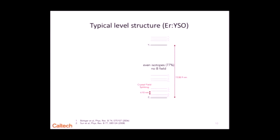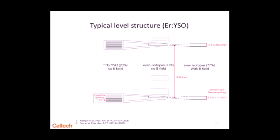So these are our atoms. If you think about the level structure, they have 4f states like z1, y1. When you place them in a crystal, these states split into the crystal field splitting, and the spacing is on the order of terahertz — about 10 nanometers. Here I show you the example of erbium, but the level structure is very similar for other materials like neodymium, terbium, and praseodymium. If you apply a magnetic field, this level splits into two Zeeman states, similar to an atom. If you have an isotope that has nuclear spin, you can have hyperfine splitting. For example, in erbium, each one of these levels is split into eight hyperfine states. If you apply another magnetic field, you can actually split these two hyperfine manifolds into two Zeeman manifolds.